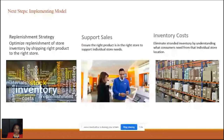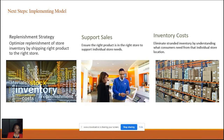After implementation, the model was handed off to our Chief Data Office and implemented across the entire global supply chain. Benefits included: an optimized replenishment strategy ensuring the right products were at the right stores, support for sales with customers more likely to find the product they need, and reduced inventory costs by eliminating stranded inventory in warehouses and stores.